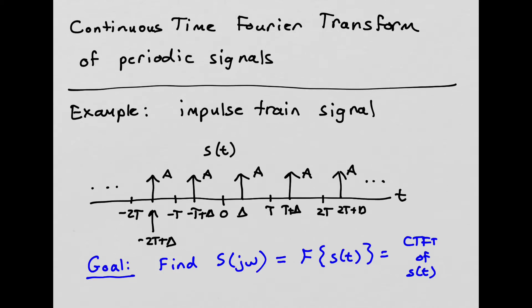Hi everyone, and welcome back to another continuous time linear systems video. The purpose of this video is to review the continuous time Fourier transform of periodic signals. As an example, we'll take this impulse train signal S that I've sketched here. Our goal is to find S̃, which is the Fourier transform of S, the continuous time Fourier transform of S.